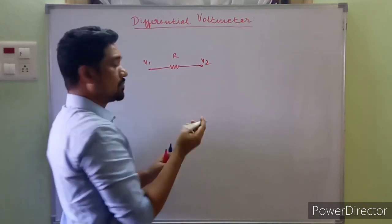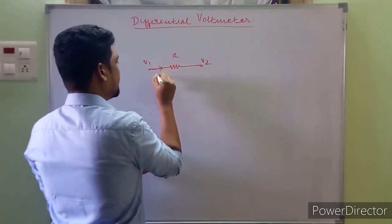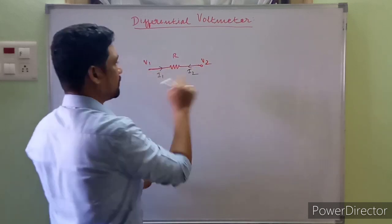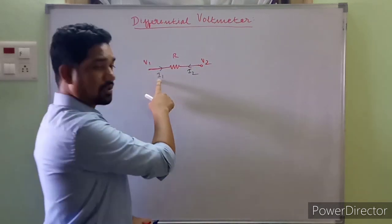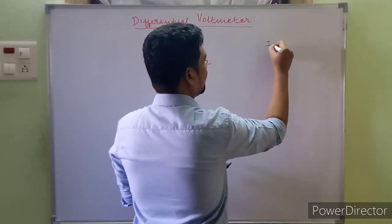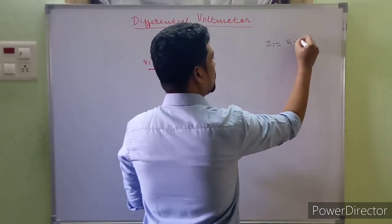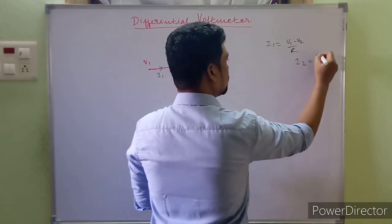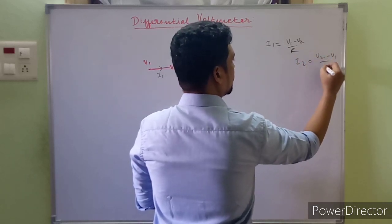I1 comes into existence because of V1, and I2 comes into existence because of V2. So how to write the expression for current I1? I1 will be equal to V1 minus V2 upon R, or else I2 equals V2 minus V1 upon R.